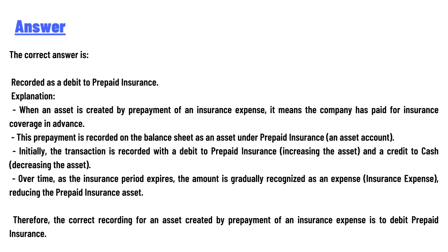Initially, the transaction is recorded with a debit to Prepaid Insurance and a credit to Cash. Over time, as the insurance period expires, the amount is gradually recognized as an expense, reducing the Prepaid Insurance asset. Therefore, the correct recording is to debit Prepaid Insurance.